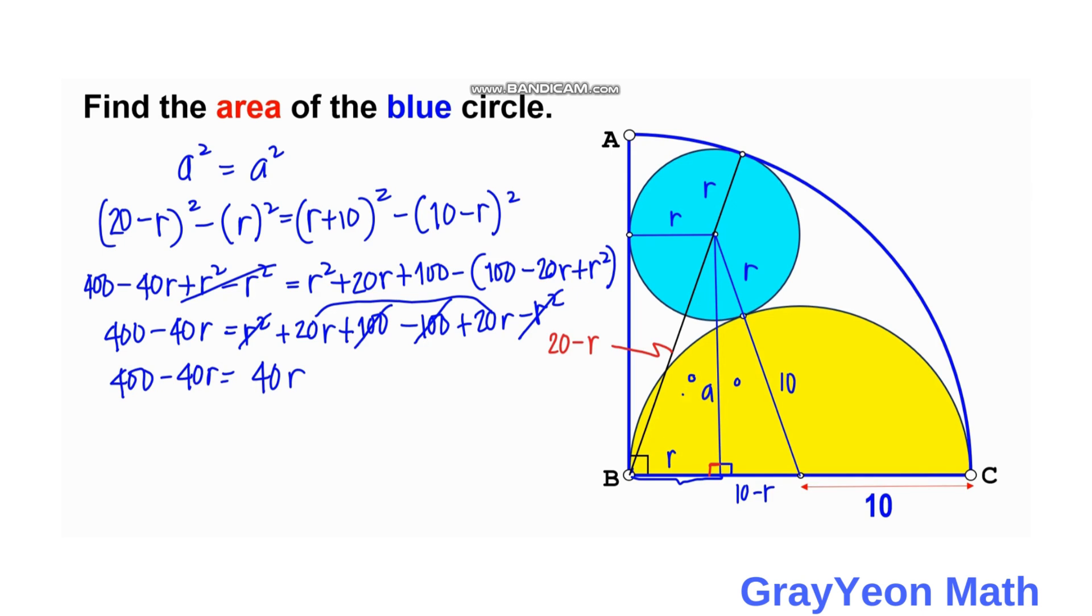So putting this to the right, so we have 40 plus 40, so 80r is equal to 400. And it gives us, if we divide both sides by 80, so it gives us the value of r of 5 units.